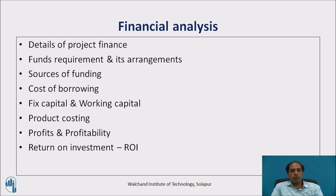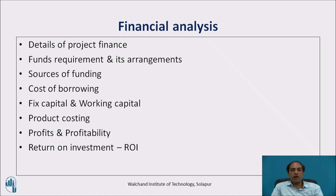Finally, the main ultimate aim of doing a business is to have profit and profitability. Financial analysis of the project includes details of project finance, funds, sourcing of funds, capital cost, profits and profitability, and ultimately what is the return on investment (ROI). Once you can calculate the ROI, you should be able to find out whether it is justifiable or not. Generally, an ROI of 3 to 5 years payback or 20 to 30 percent return is taken as a very good result. Once the ROI is justifiable, all banks or financial institutions will definitely help you finance the project.